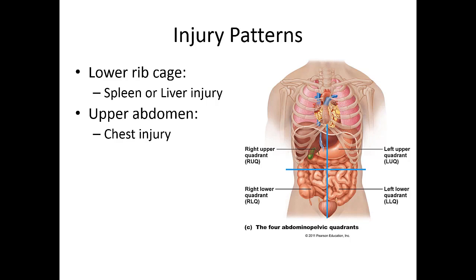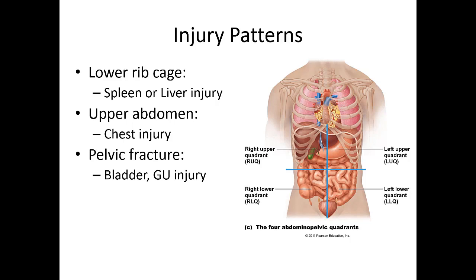Any upper abdominal injury — in addition to injuring the liver, stomach, pancreas, and spleen — it's important to realize the heart is right there as well. In that middle area of the lower ribs, it can be chest or abdominal, so remember to consider both types of injuries. Moving lower, with pelvic injuries and pelvic fractures, there's also a lot of important underlying anatomy prone to injury, especially the bladder and the genitourinary tract.